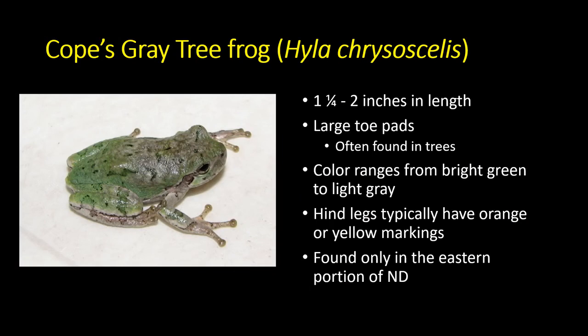The next frog is the one true tree frog we have in North Dakota — the Cope's gray tree frog, Hyla chrysoscelis, though it's probably undergoing a common name change, so we'll just call it the gray tree frog for now. It's a bit larger, about an inch and a half to two inches in length. The toe pads — or toe discs — are much larger than those on the chorus frog.